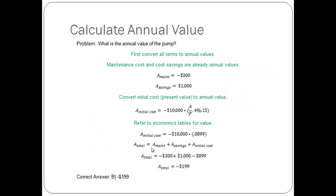Putting it all together, we take the maintenance costs, the savings, both in annual terms, we get the converted initial costs shown here, and we sum them up together to get the annual value of the pump as negative $199.